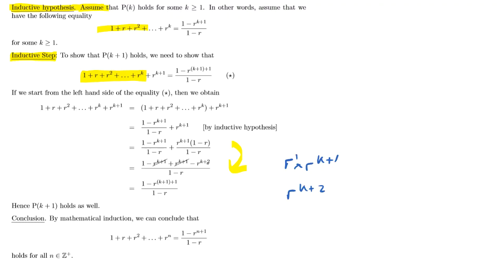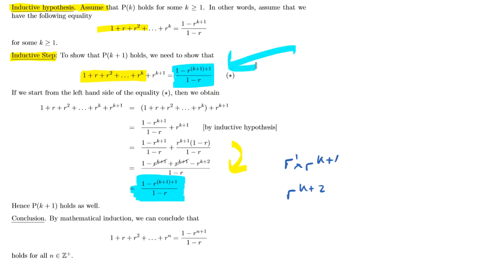Now k+2 is just (k+1)+1, and at this point we can recognize that our result — 1 minus r to the (k+1)+1 all over 1 minus r — is exactly what we wanted. Once we've used algebra on the left hand side to obtain the same expression as the right hand side, we can say P(k+1) holds. Our conclusion step brings it all together: by mathematical induction we conclude that the proof holds for all values of n, because P(1) holds and whenever P(k) holds then P(k+1) also holds, so it holds for all positive integers.